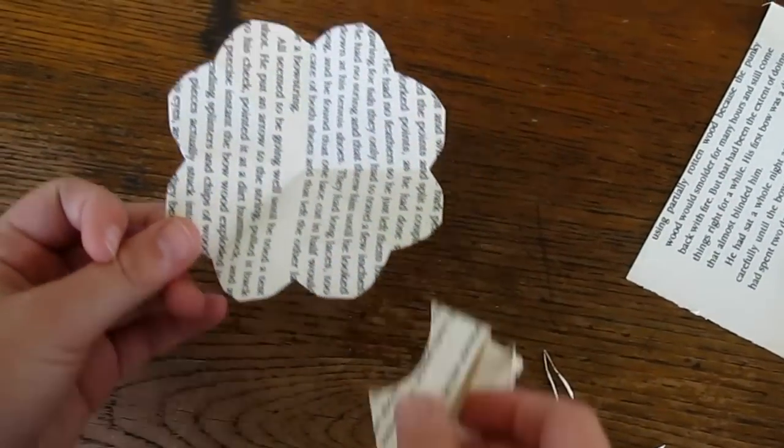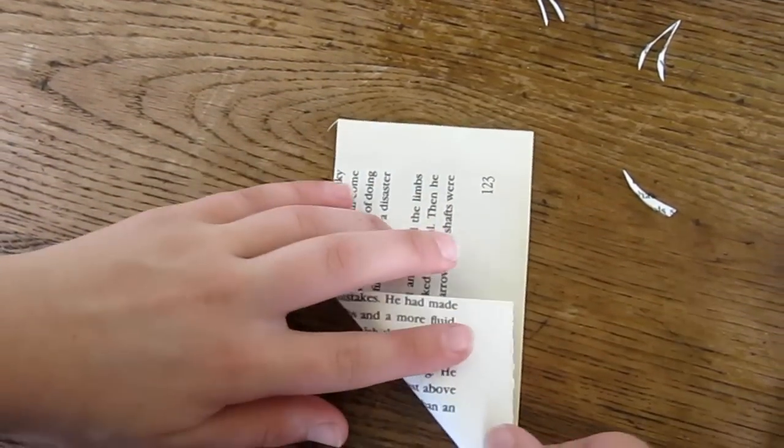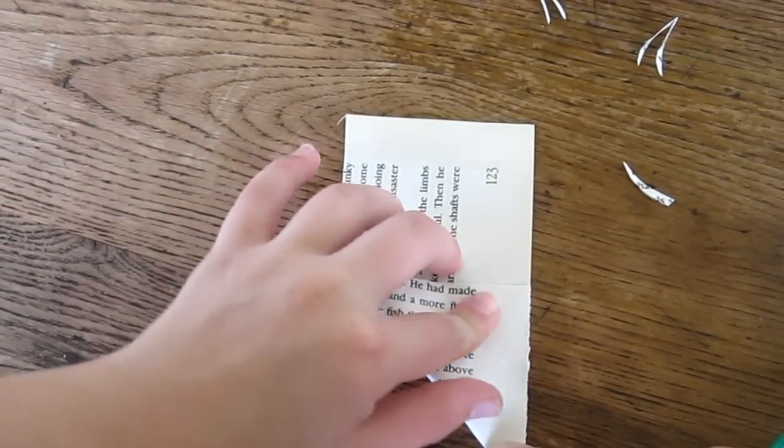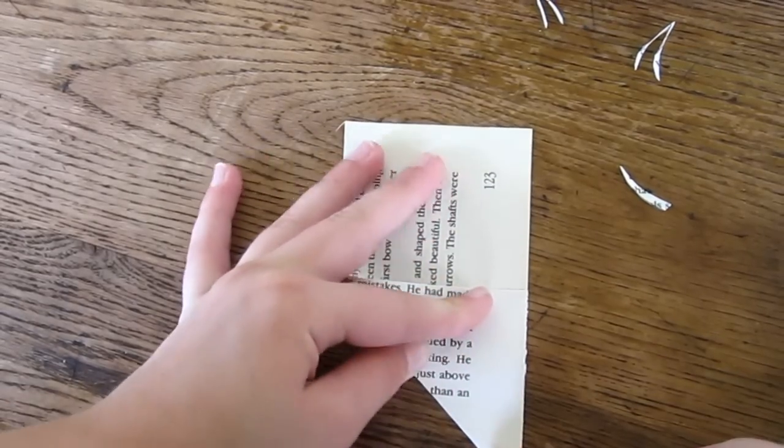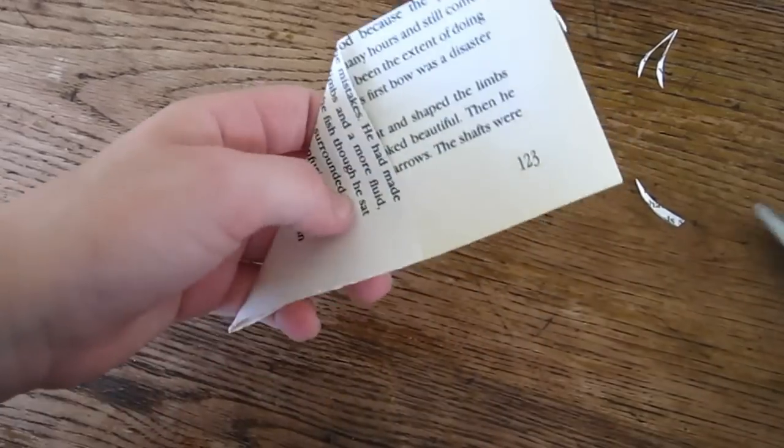Now we're going to make a smaller flower with a different petal shape to put on top of it. So again, fold your base triangle and cut off your remainder.